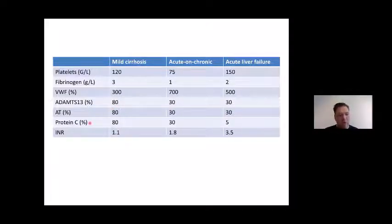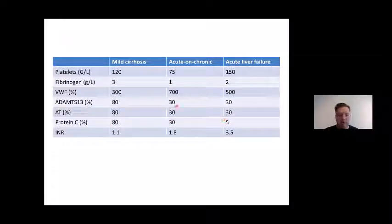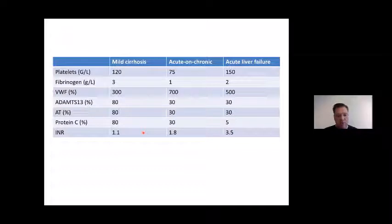A number of proteins synthesized by hepatocytes — so derived from the liver — are relatively normal and slightly decreased in patients with mild cirrhosis, but levels really go down to about 30% of normal for most of these proteins in ACLF or ALF. INR is relatively normal in mild cirrhosis, clearly elevated in ACLF, and tremendously elevated in ALF.